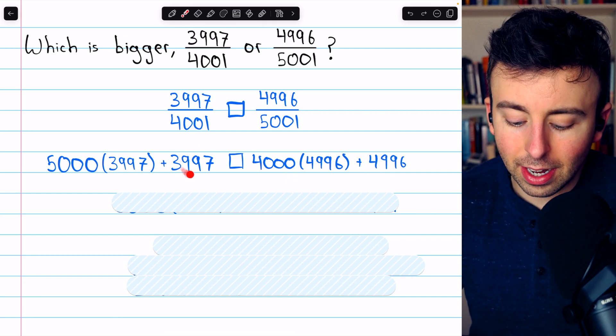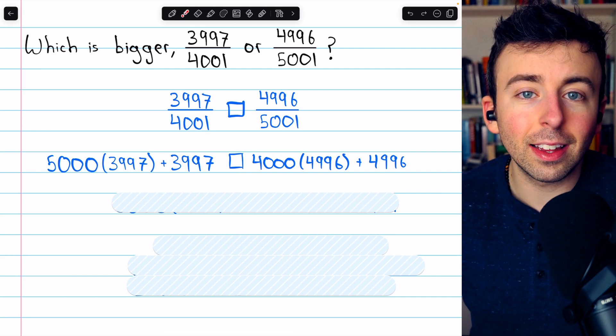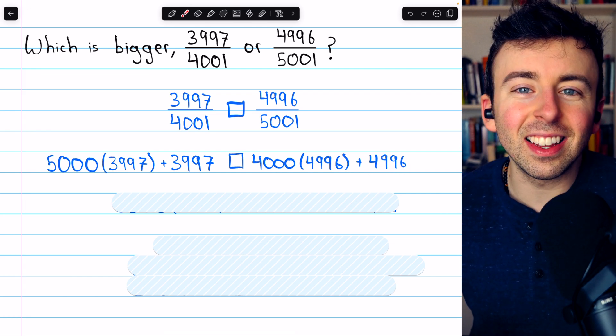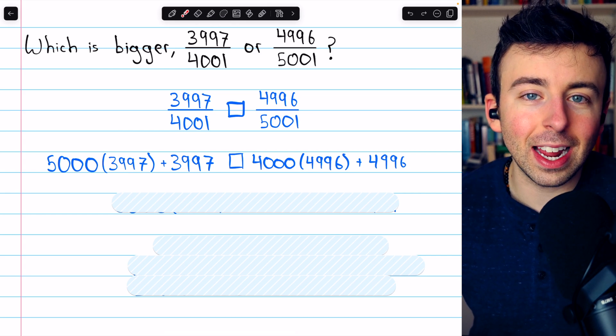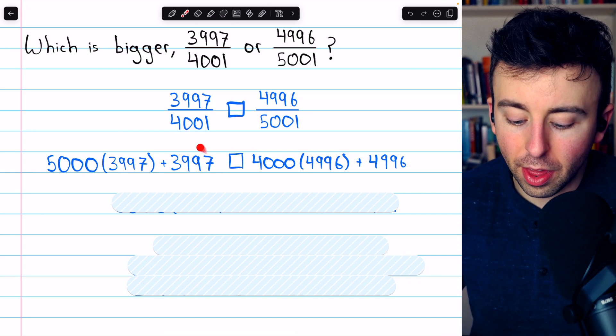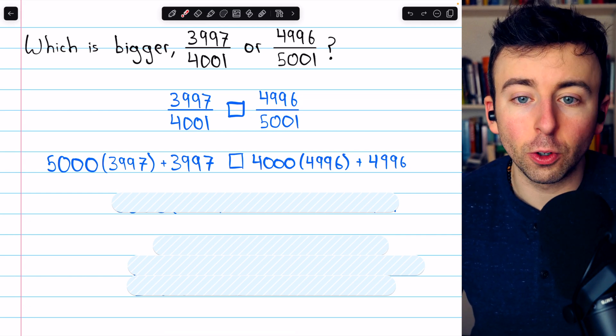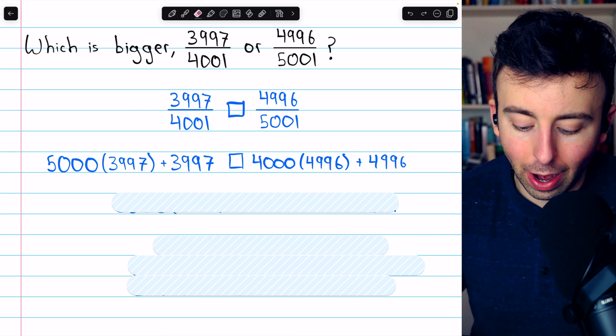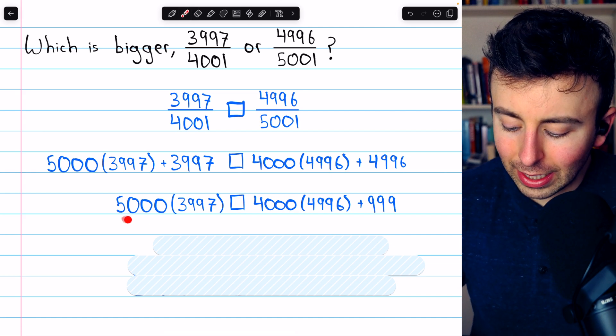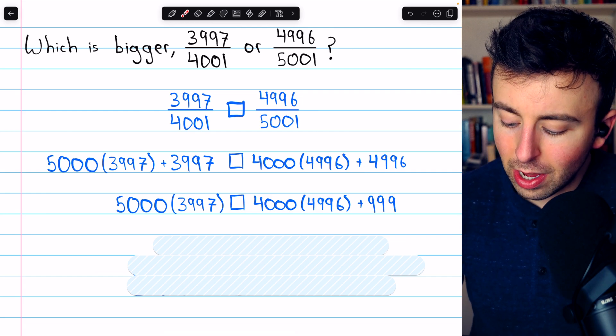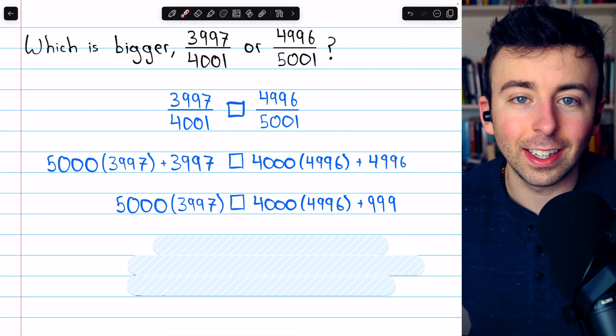Now let's subtract 3,997 from both sides. Hopefully you can see that 4,996 is exactly 999 greater than this because it's one short of being 1,000 greater. Thus, when we subtract 3,997 from both sides, we're going to get to this. So now instead of plus 4,996, we have plus 999.